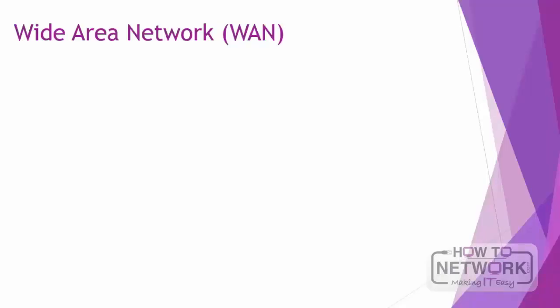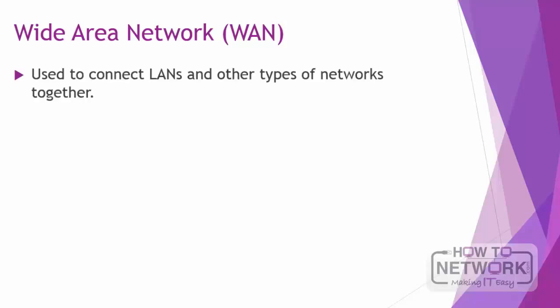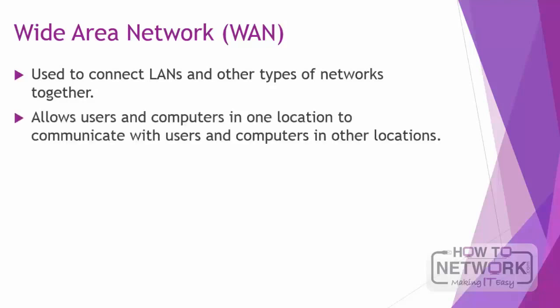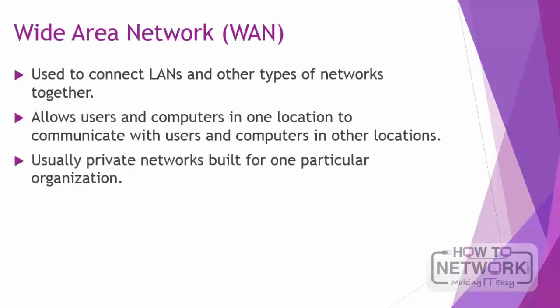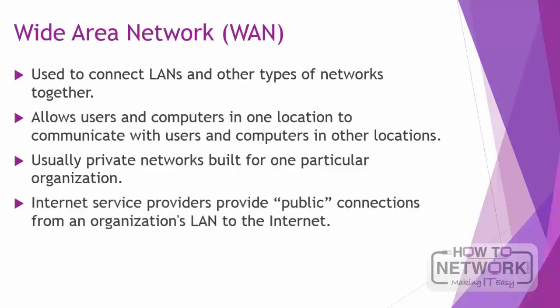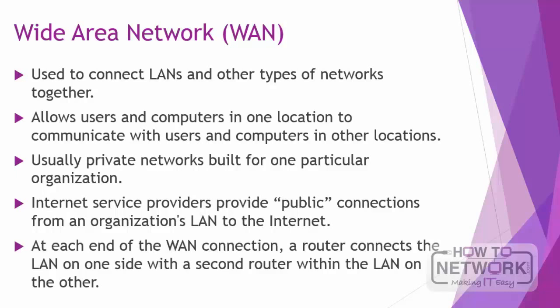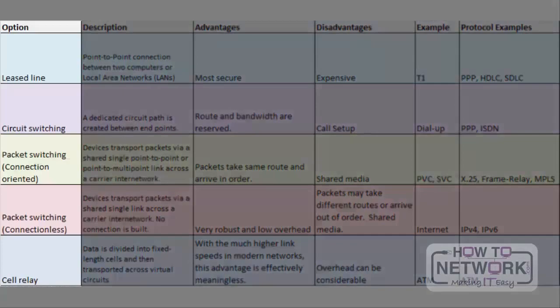The wide area network is used to connect LANs or other types of networks together. It allows users and computers in one location to communicate with users and computers in other locations. WANs are usually private networks built for one particular organization, though most businesses also have a public internet connection. At the end of each WAN connection a router connects the LAN on one side with a second router to the LAN on the other side. There are five primary types of WAN technologies: leased line, circuit switching, packet switching (connection-oriented), connectionless, and cell relay.